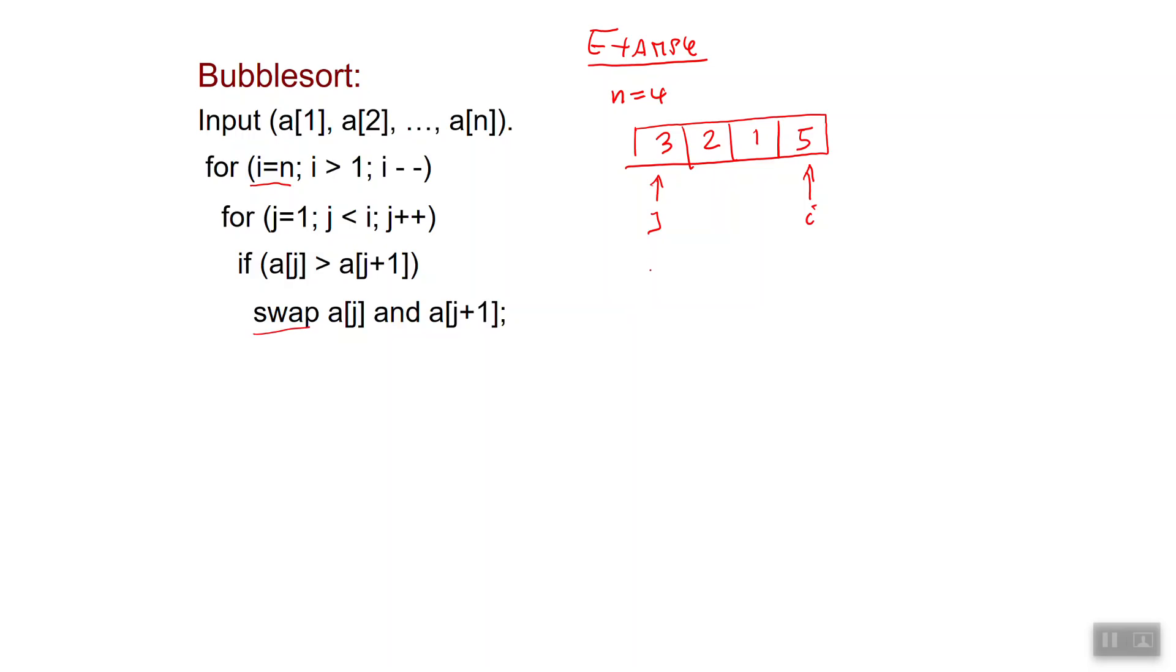So I have a sequence like 2, 3, 1, 5, at which point my j index is here and i stayed here. Then again I'm comparing the one at position j with the one at position j plus 1, and again I have to swap them, so now I obtain 2, 1, 3, 5. j is here and i is here.